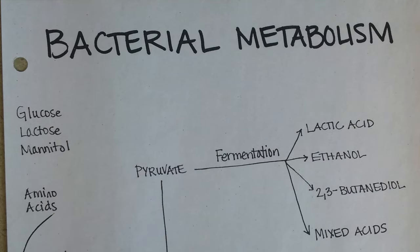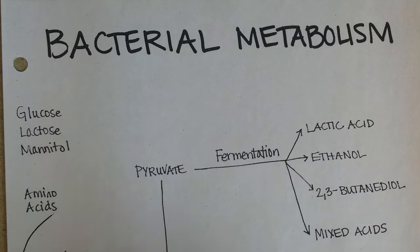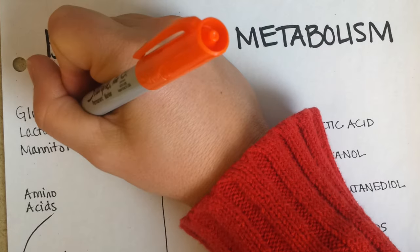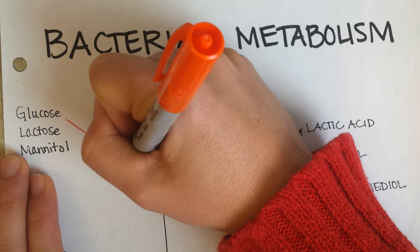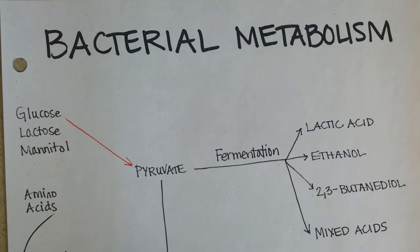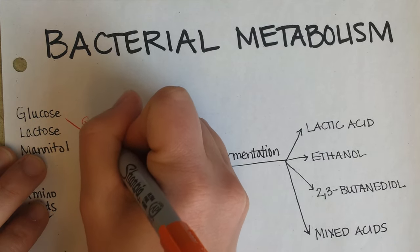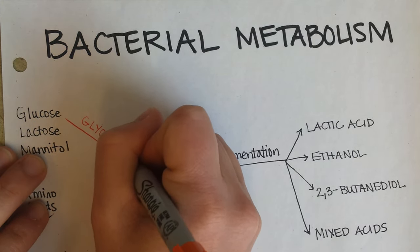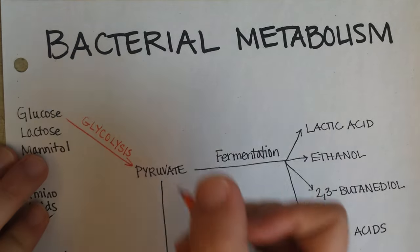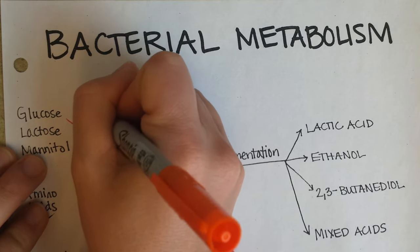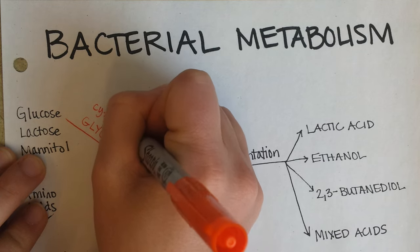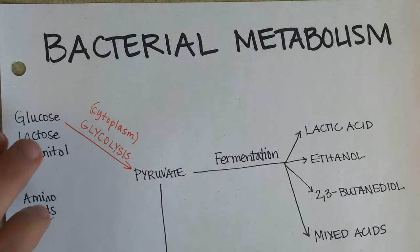Bacterial metabolism. When you took general biology, you undoubtedly learned about a process called cellular respiration. The first part of that, which happens in all living cells, is the ability to convert glucose to pyruvate. That process is called glycolysis. It occurs in the cytoplasm of all cells — every living thing can do this process.